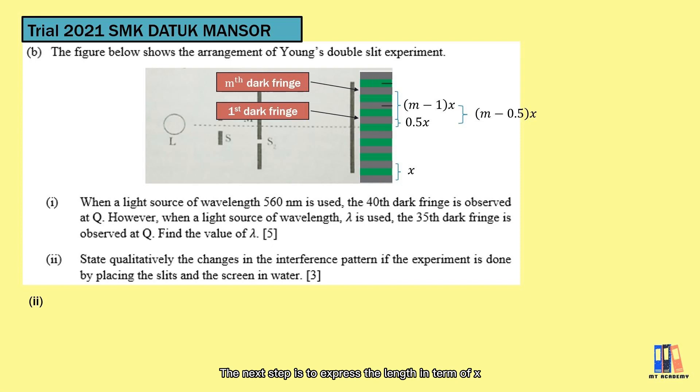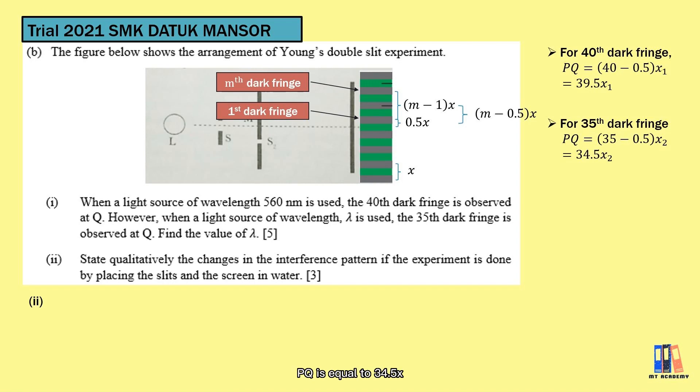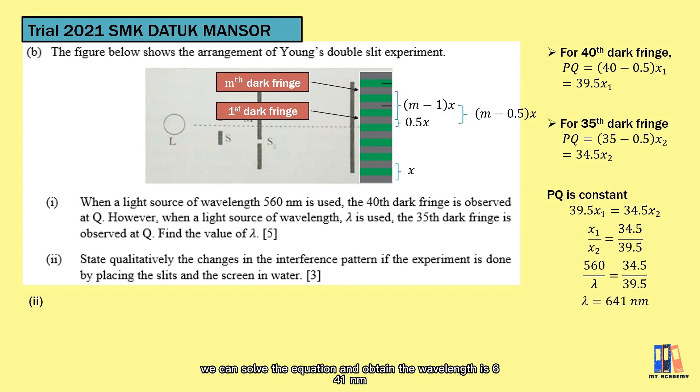The next step is to express the length in terms of x. For the first case, we have 40th dark fringe, so PQ equals 39.5x. Next, when we have 35th dark fringe at Q, PQ equals 34.5x. Back to the question, we need to find the value of wavelength. We have the formula x = λD/a, and x is directly proportional to wavelength. From here, we can equate both expressions of PQ since it is constant in both cases. We have 39.5x₁ = 34.5x₂. Substituting the ratio of x with the ratio of wavelength, we can solve the equation and obtain the wavelength is 641 nanometer.